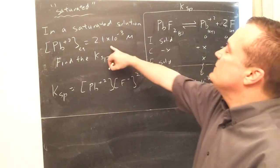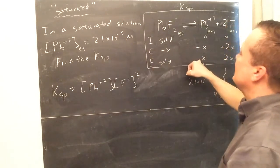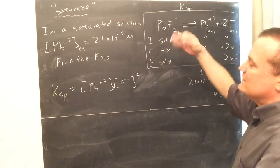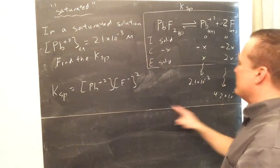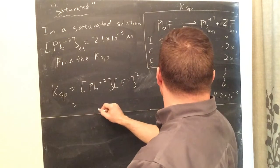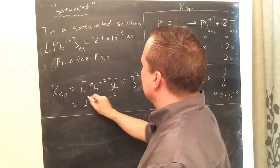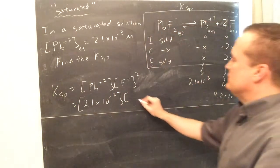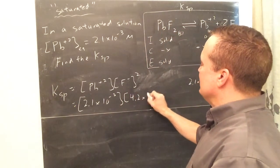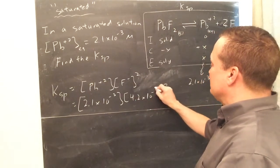Like, they can even say, 2.1×10 to negative 3 moles of lead are dissolved in a saturated solution of PbF2. Find the KSP of PbF2. So, then we'll put the number in. Pb is 2.1×10 to the negative 3. The F negative is 4.2 times 10 to the negative 3. And then you get the square of the F negative. Don't forget to do that.